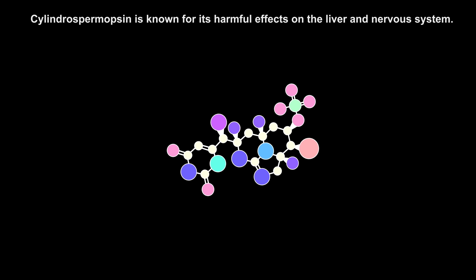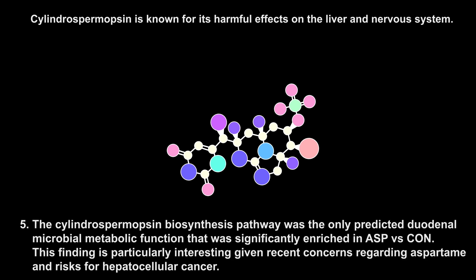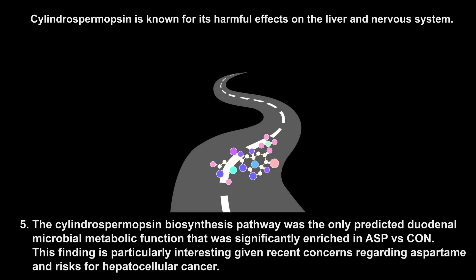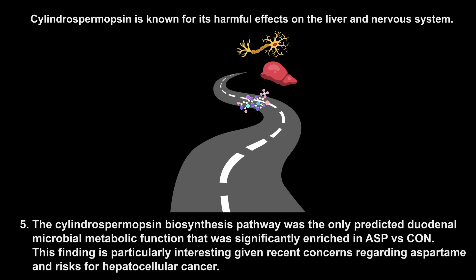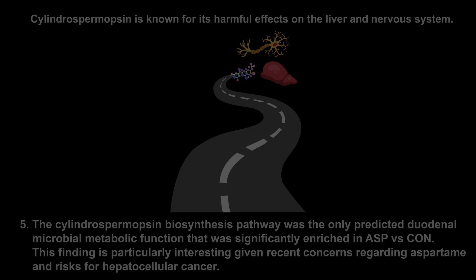Cylindrospermopsin is known for its harmful effects on the liver and nervous system. The Cylindrospermopsin biosynthesis pathway was the only predicted duodenal microbial metabolic function significantly enriched in ASP versus controls. This finding is particularly interesting given recent concerns regarding aspartame and risk for hepatocellular cancer.